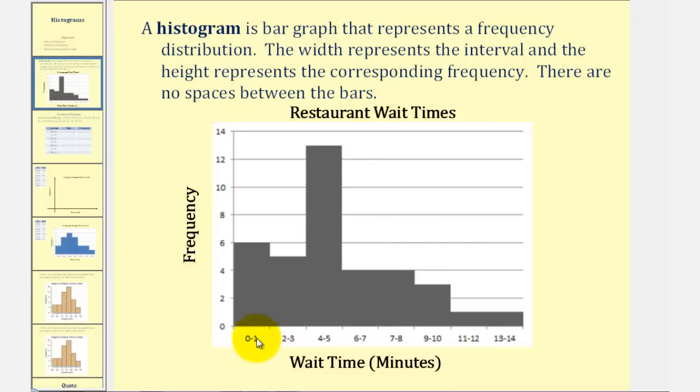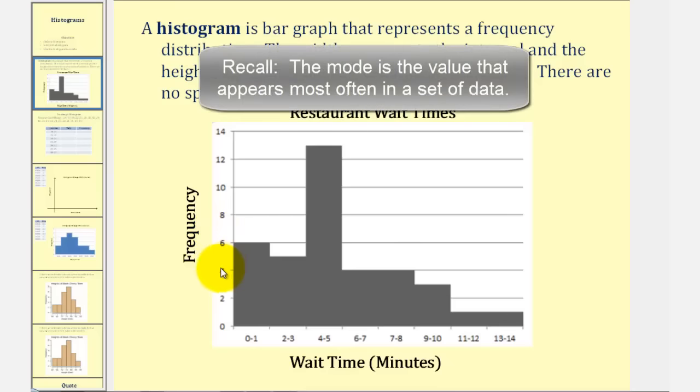So looking at the given histogram, notice how the intervals have the same width of the same size, which once again means the bars have the same width. These categories here, or the intervals, are often called the bins. And then notice the vertical axis indicates the frequency, so we can easily see that the mode of wait times is four to five minutes. It looks like it occurred thirteen times.